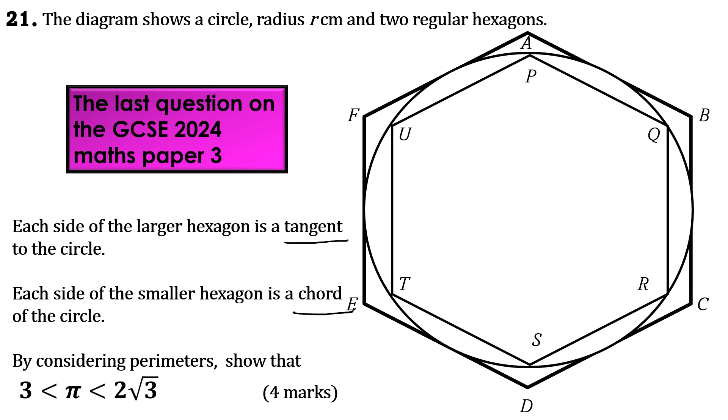By considering perimeters, show that π is greater than 3, it is less than 2 root 3. And this question was only for 4 marks.